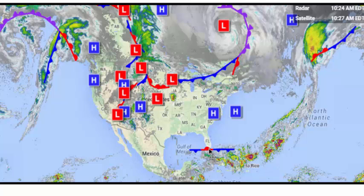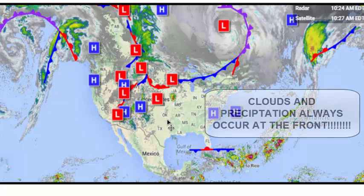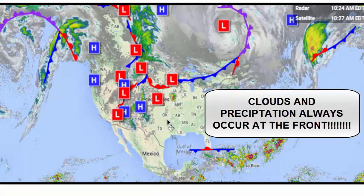Down off Florida where we have a stationary front and a cold front, we have clouds, and the green, yellow, red, and orange colored areas represent precipitation. If you look at this map, everywhere there's a front there is weather occurring — clouds and precipitation. In the southeastern and mid-eastern United States where there's not a single front, there is very little weather going on. You always have to remember: clouds and precipitation always occur at or near the fronts on a weather map.